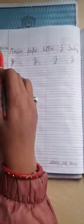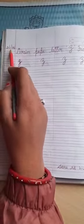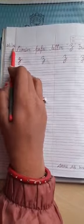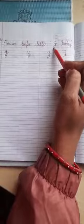So first we will write the date. The date is 21.1.22. It is your class work, and you have to write the heading: cursive papa letter Z or Z.